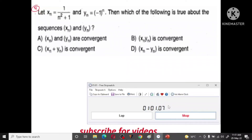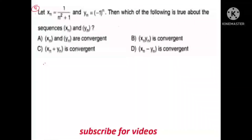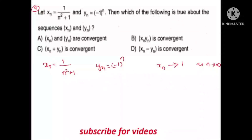Now we will take the next question. The sequence is 1 by n². xn is equal to 1 as n tends to infinity; n is equal to 0. xn is equal to 0. And yn is equal to 1 as n tends to infinity. As n tends to infinity, 1 equals minus 1. That is yn.